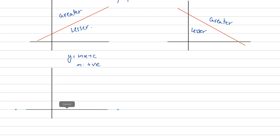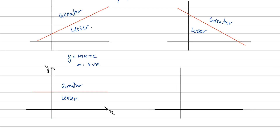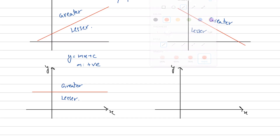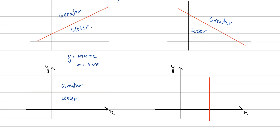In the third case we have a horizontal line. For a horizontal line there's nothing right or left about it - it's just up or below. The region above the line is the greater than region, and the region below the line is the lesser than region. Its equation looks like y = c. For the fourth case - a vertical line with equation x = b - the region towards the right side of the line is the greater than region, and the region on the left side is the lesser than region.